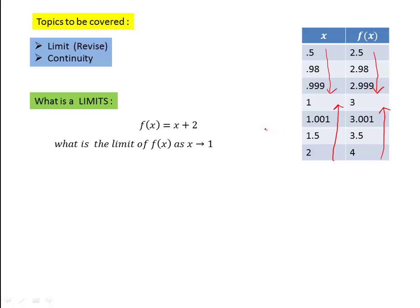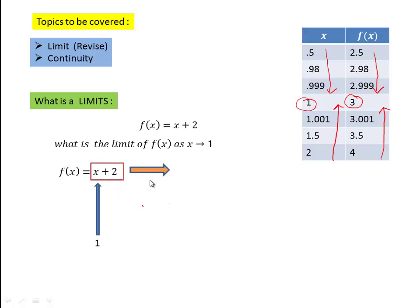From either case, we observe that when the x value is approaching very close to 1, the value of the function is approaching very close to 3. So in this function f(x) = x + 2, when x is approaching very close to 1, the value of the function is approaching very close to 3. This number 3 is the limit of this function when x is approaching towards 1.